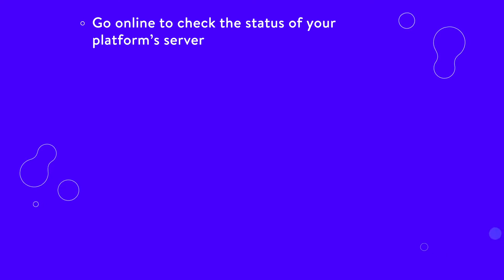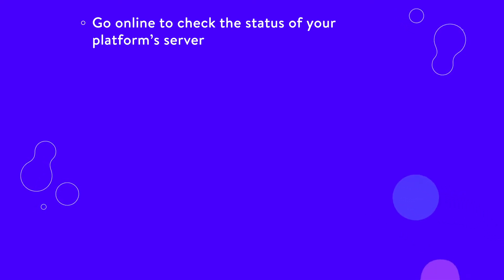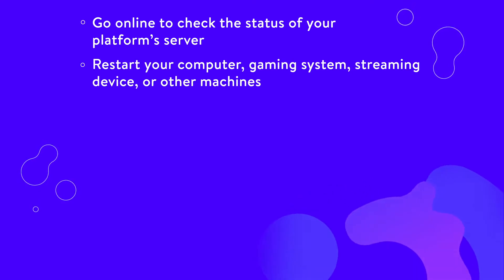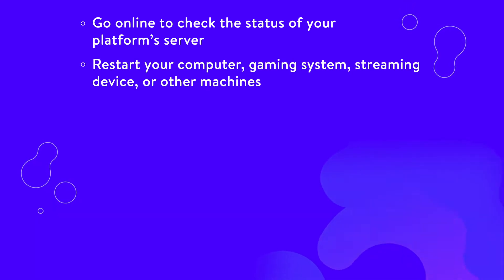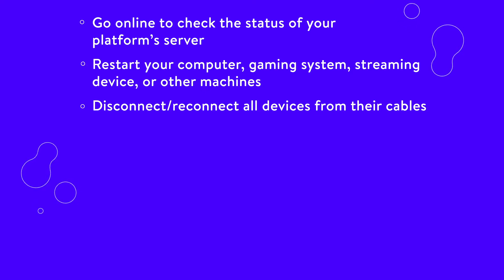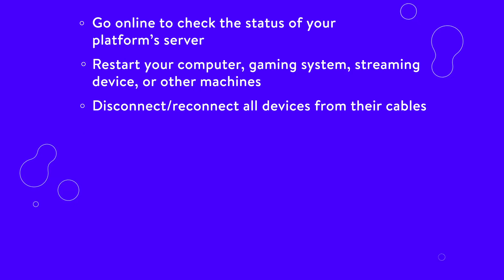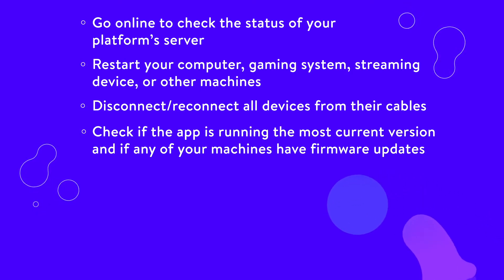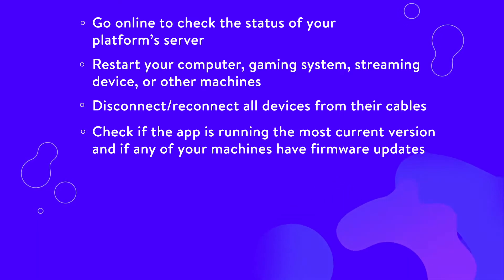Go online to check the status of your platform server — it may simply be a problem with the company's server. Restart your computer, gaming system, streaming device, or other machines. Disconnect all devices from their cables, wait a few minutes before reconnecting them all, and check to see if the error is gone. Check if the app is running the most current version, and also see if any of your machines have firmware updates available.